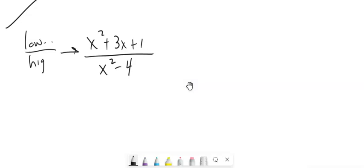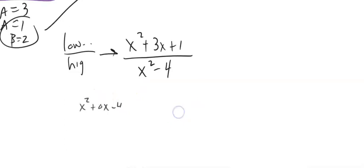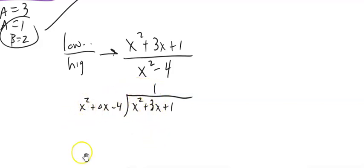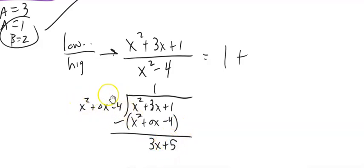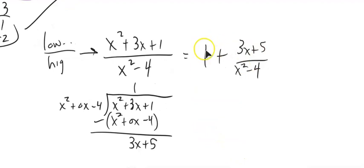You'll need to do polynomial long division, which you would have seen in pre-calc. So here is the long division: x squared goes into x squared once. Multiply that through to get x squared plus 0x minus 4, then subtract. x squared minus x squared is 0, 3x minus 0x is 3x, and 1 minus negative 4 is plus 5. So this divided by that is 1 plus a remainder of 3x plus 5 over x squared minus 4. Now I have 1 plus a lower-degree-over-higher-degree fraction.